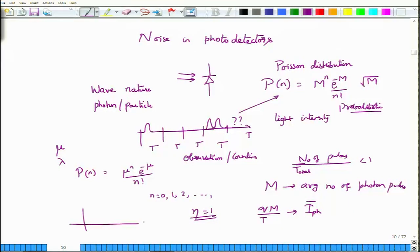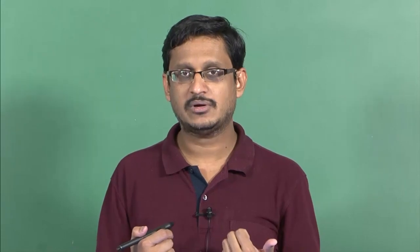The total photo current has an average value I_PH with fluctuations around it. As the observation interval t approaches zero and intensity is raised to microwatt or milliwatt levels — much higher than the picowatt range discussed earlier — the Poisson distribution essentially becomes Gaussian, and the average power translates into an average current I_PH.